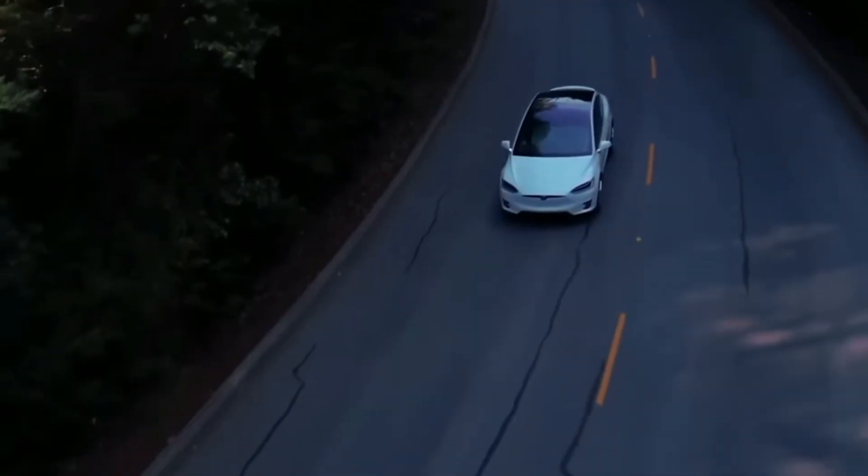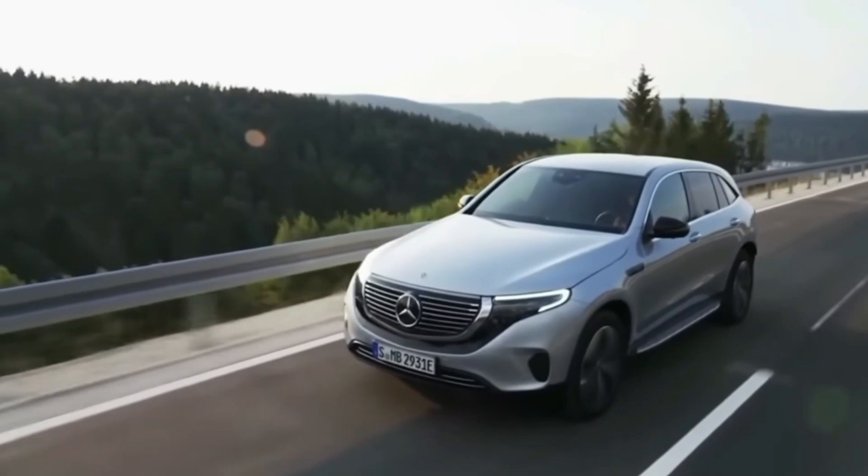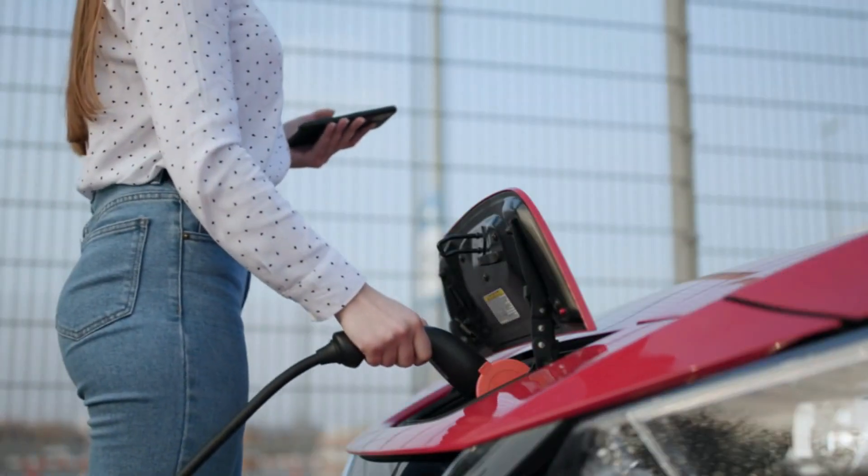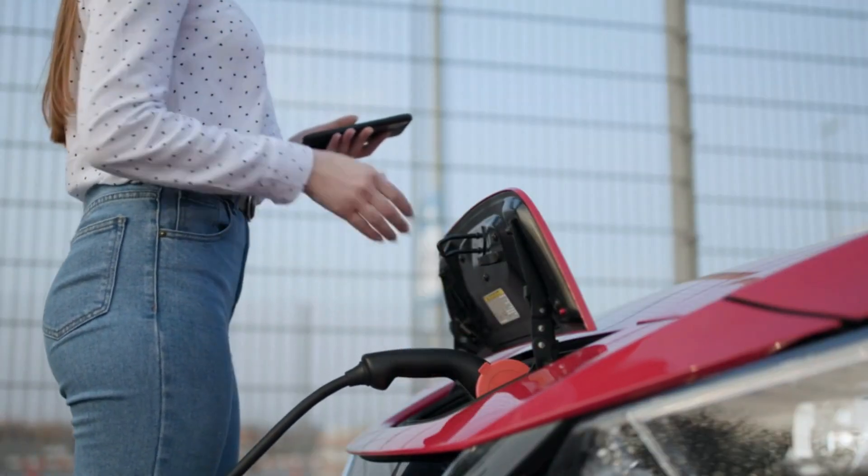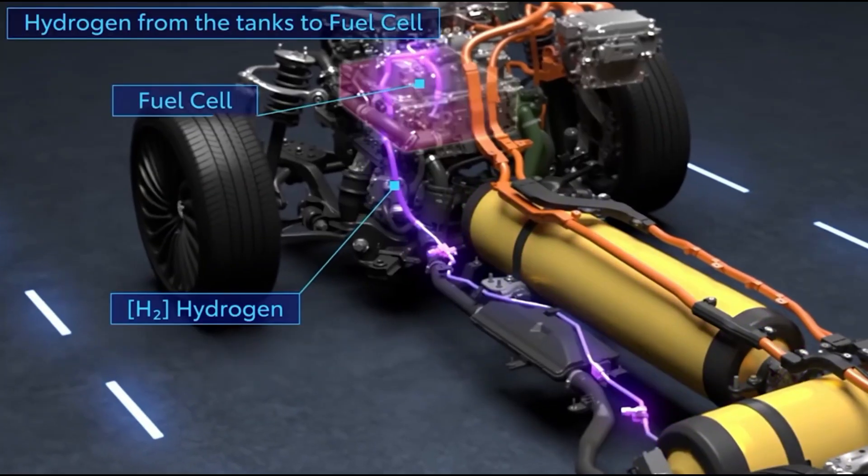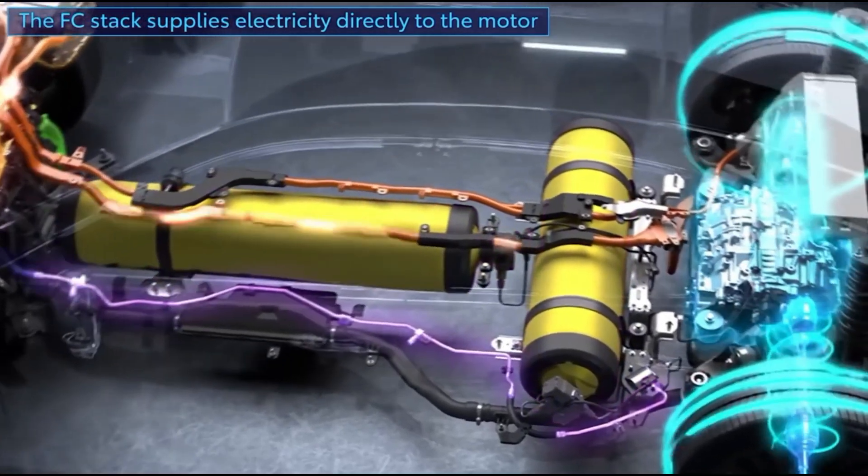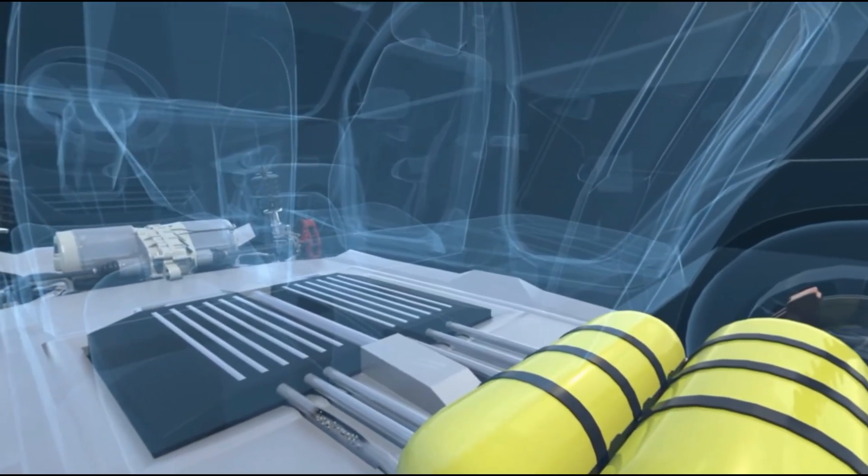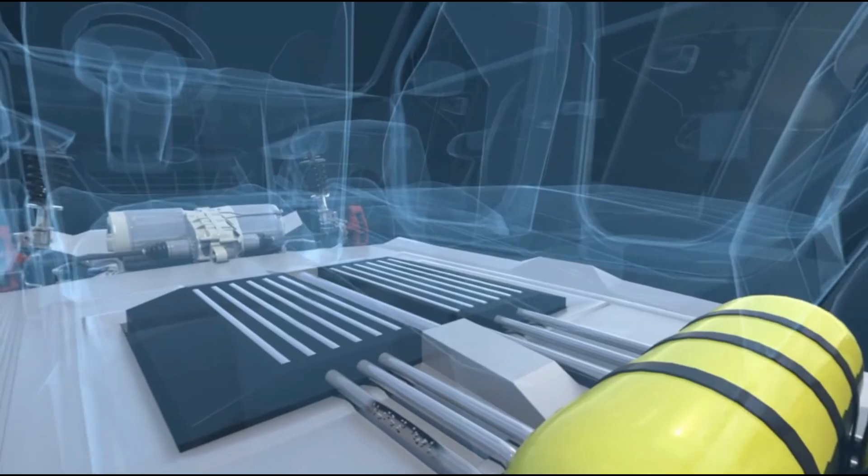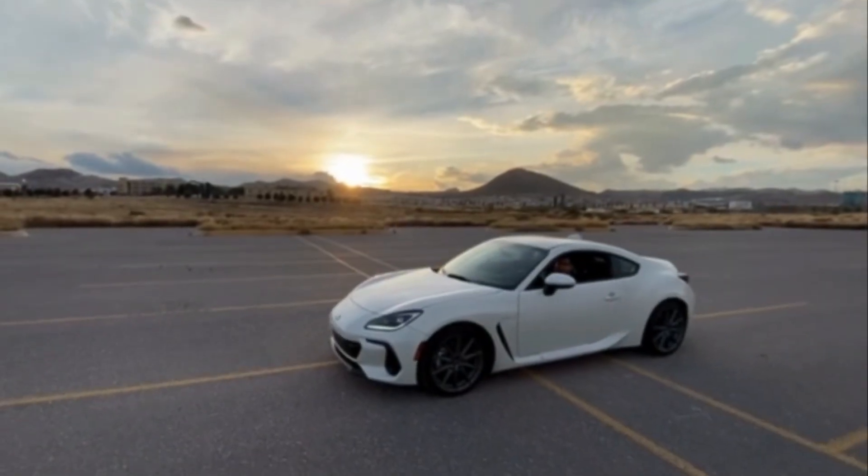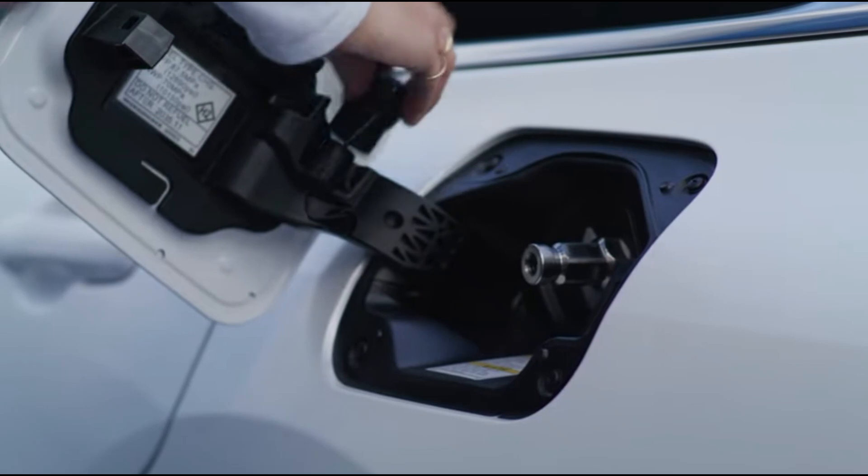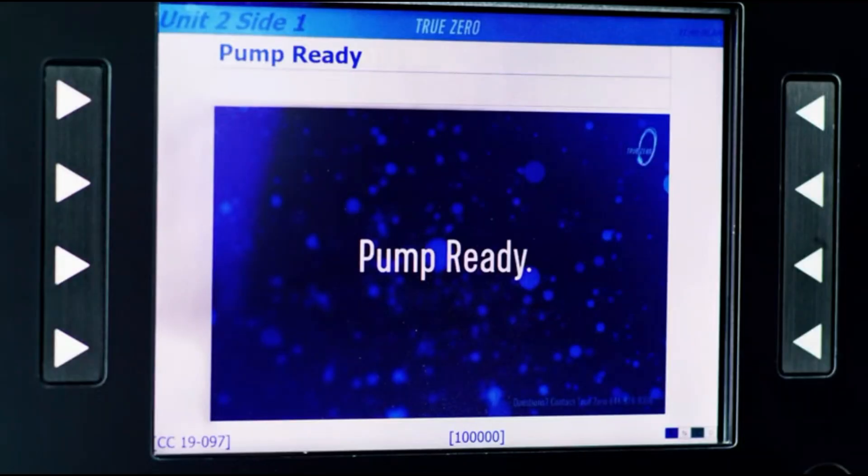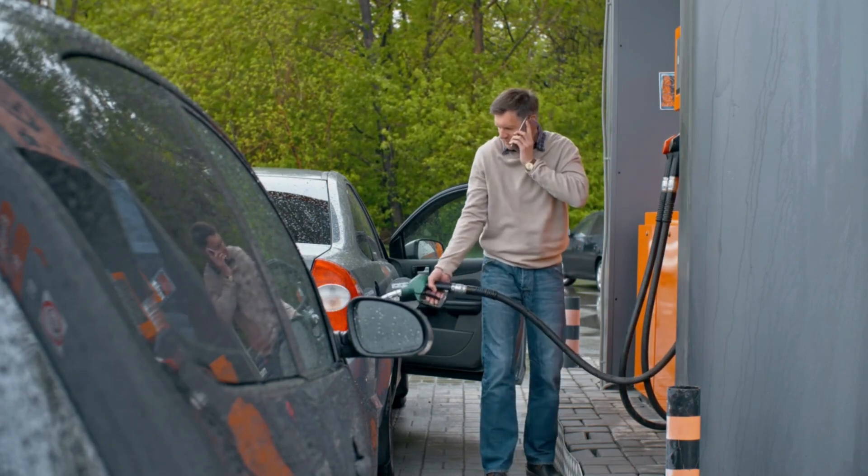Extended Range and Quick Refueling: One of the main challenges faced by electric vehicles is their limited range and the time required for recharging. However, Toyota's water engine addresses these concerns with its extended range capabilities and quick refueling process. The use of hydrogen fuel cells allows for a significantly longer driving range compared to battery-powered EVs. Additionally, refueling a water engine vehicle is as fast and convenient as refilling a traditional gasoline-powered car.